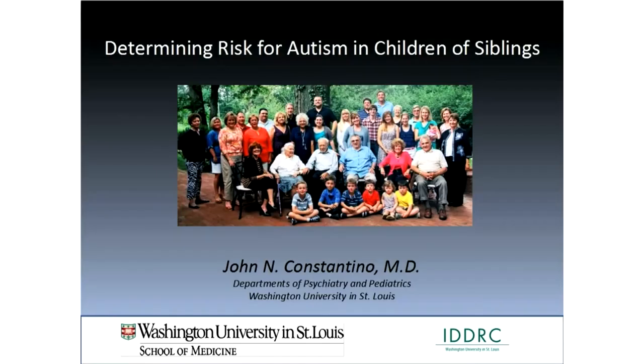As previously mentioned, the recurrence rate for children who have siblings affected by autism spectrum disorders is — just to put this into perspective — 20 times higher than the general population risk. It's remarkably high. And so thinking about how to take advantage of that understanding, and understanding what the risk is for the next generation, is the topic of this talk.